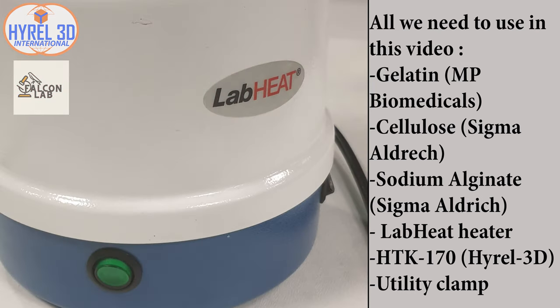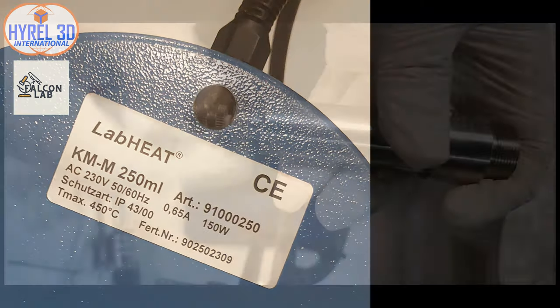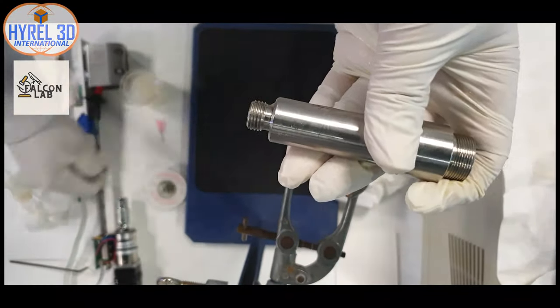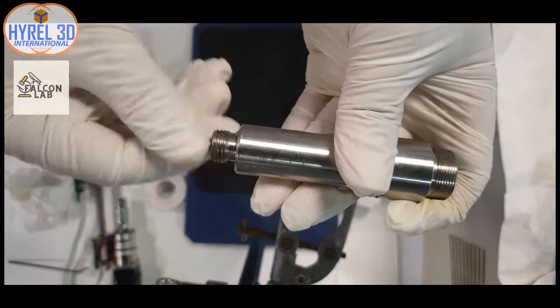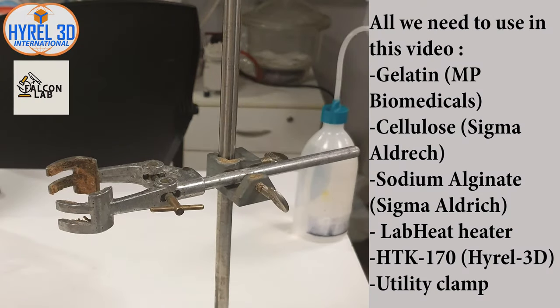If you did not see the previous video, you can find it in the channel below. We will use a special cartridge called HTK-170, as this cartridge is characterized by its ability to print under very high torque. You can also expose it to a temperature up to 180 Celsius.